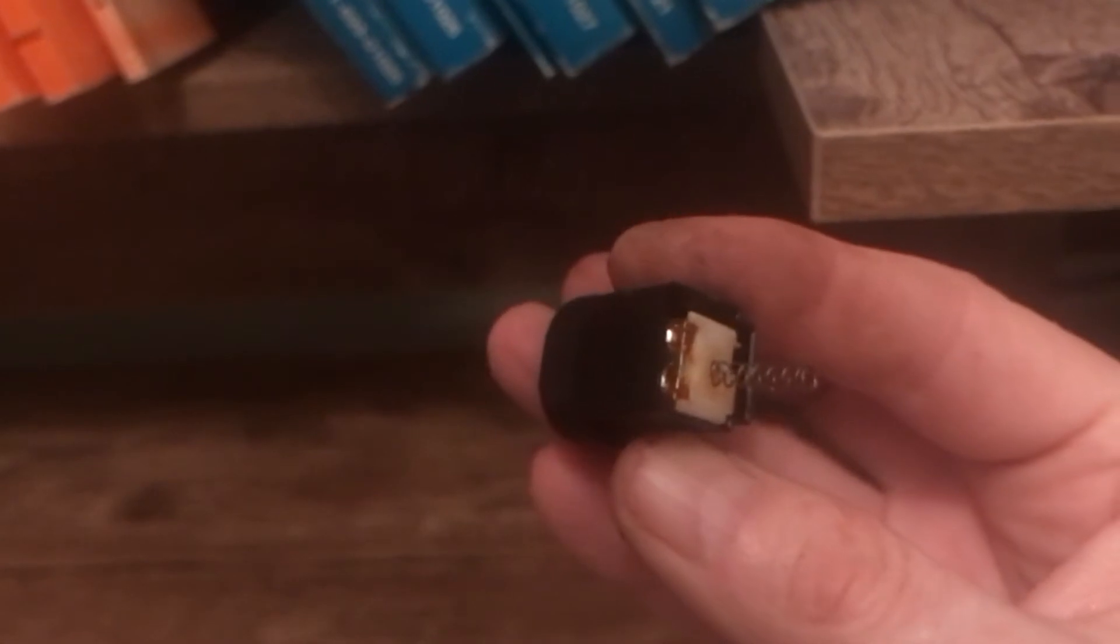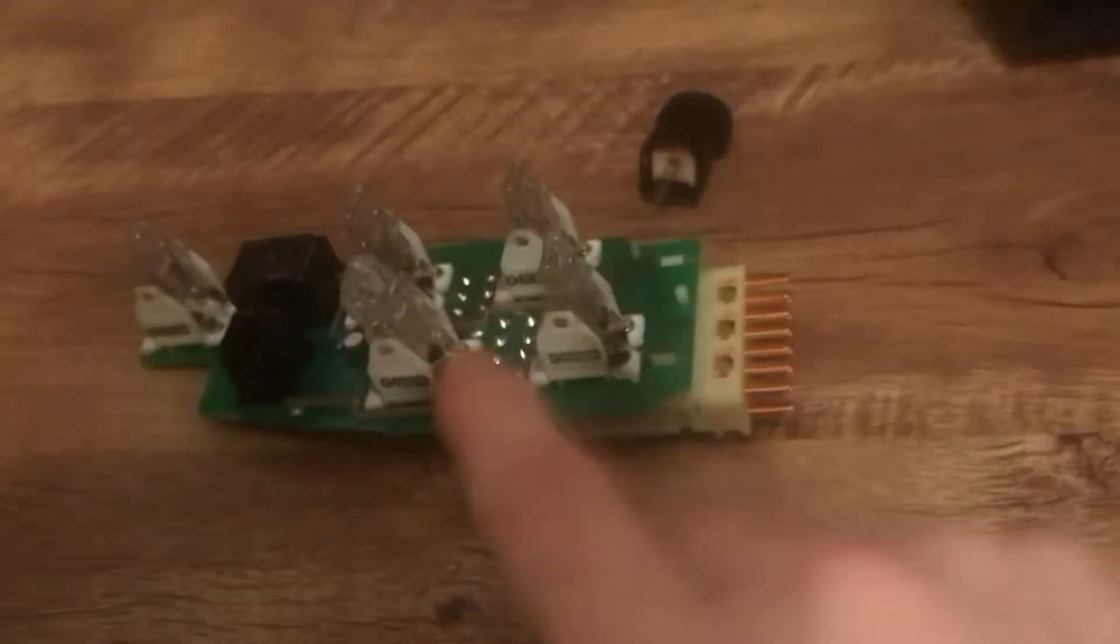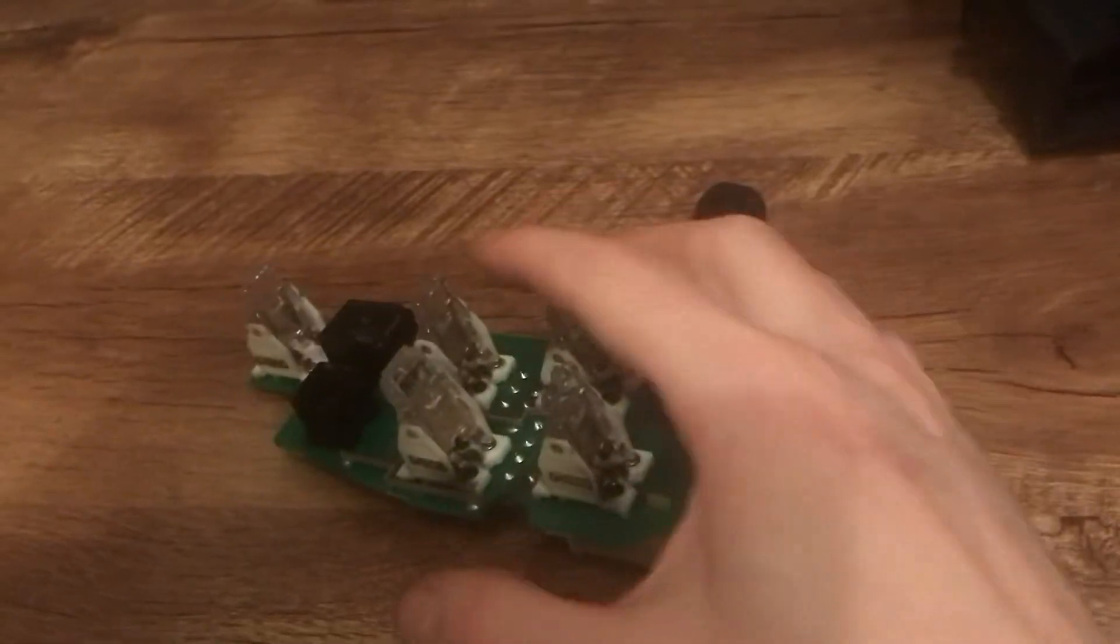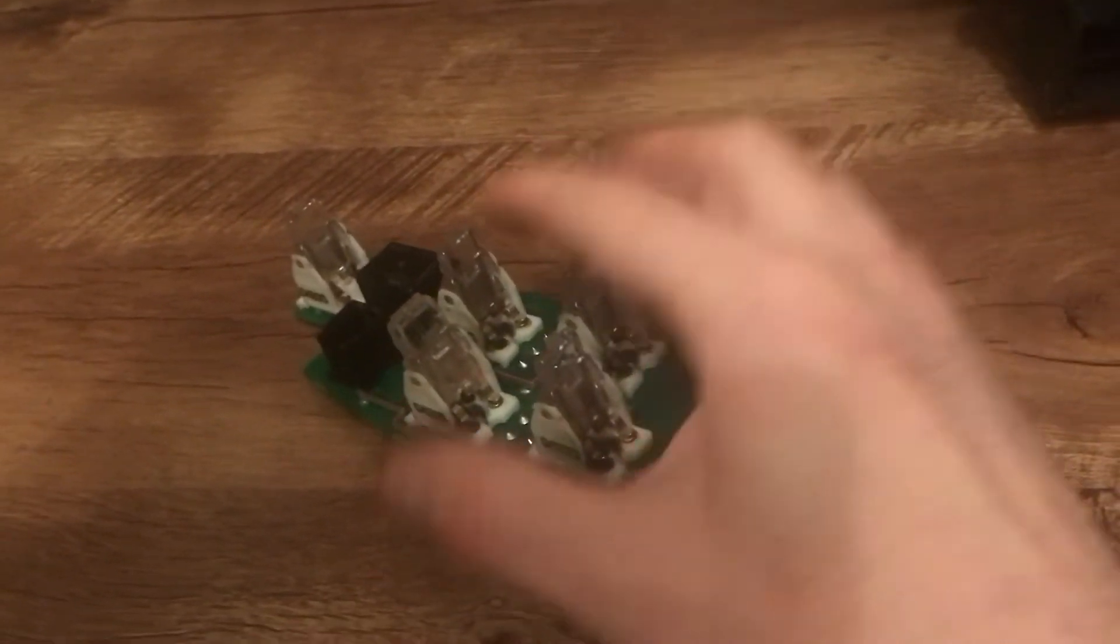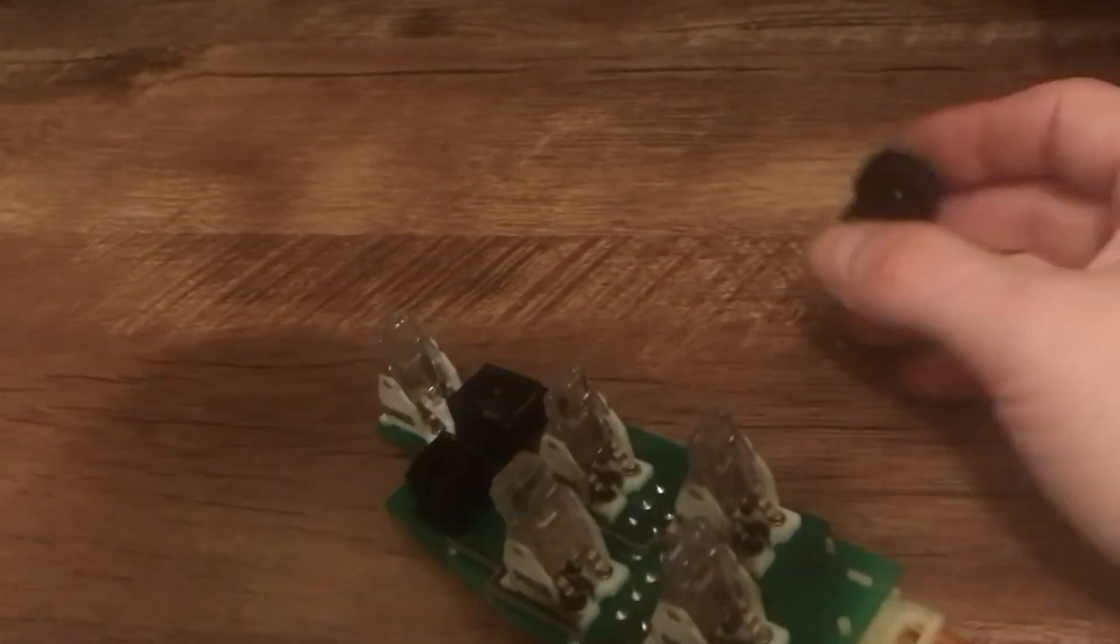What's happening is on the inside here, this plate comes up and makes contact with that. When that makes contact, it allows the power to go through the other switches. Does that make sense?